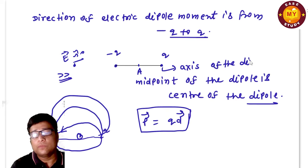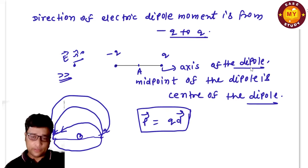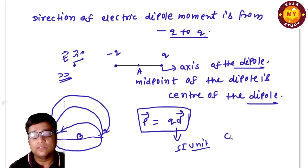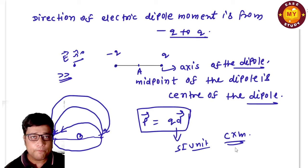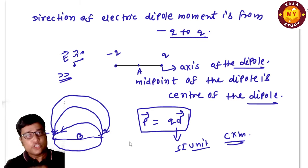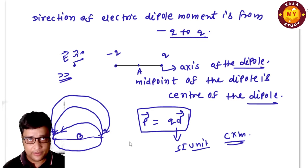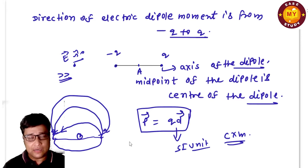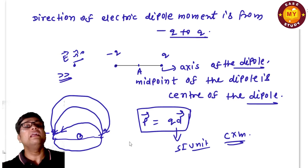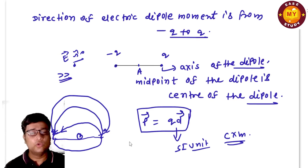The SI unit of dipole moment is coulomb-meter (C·m), since charge is in coulombs and distance is in meters. In the next class I'll cover the electric potential due to a point charge, and the electric field in a separate lecture. Please subscribe to the channel, share with friends, and let others learn and grow. Thank you — see you in the next class.